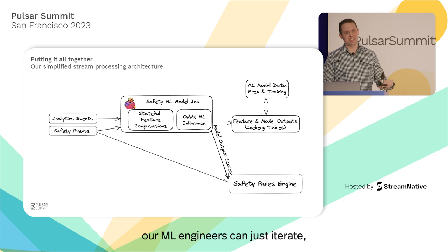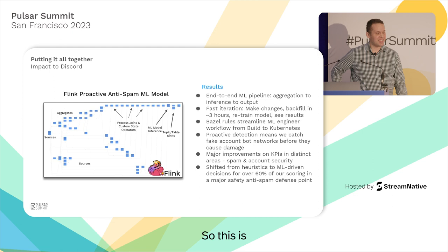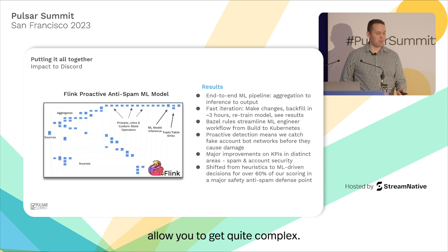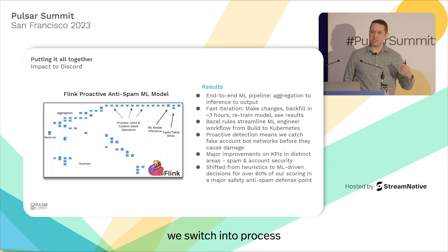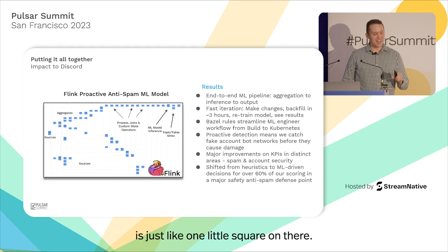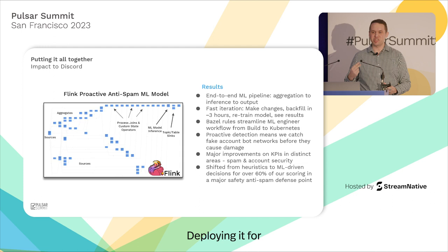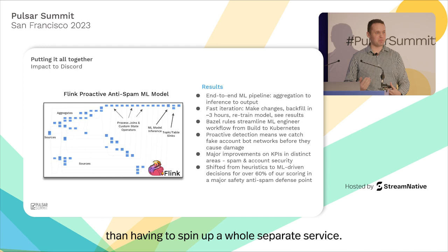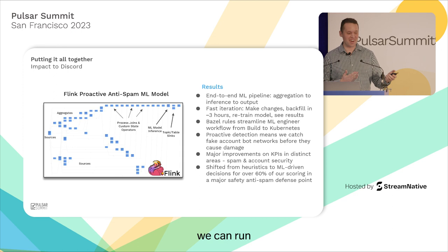On top of the simplicity, our ML engineers can just iterate — make changes and backfill within three or four hours, train a new model, deploy it, and see what's going on. The Flink UI shows that these jobs can get quite complex: multiple data sources, multiple aggregations, joins, process time for very low-latency joins, all sorts of custom logic. The ML model is just one little square on the job graph — deploying it for inference is so much simpler than spinning up a whole separate service. We have sinks to output to Iceberg, Pulsar, or anything we want.